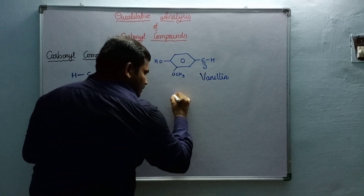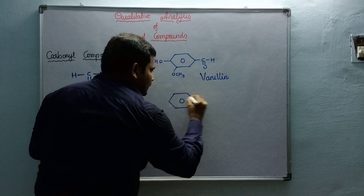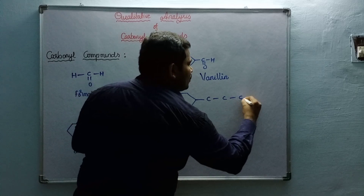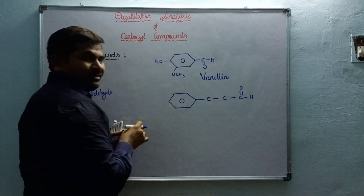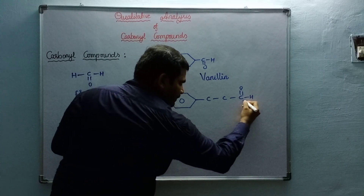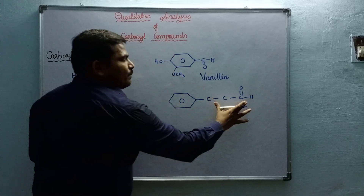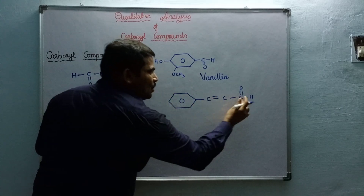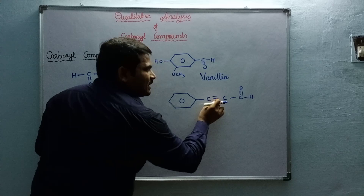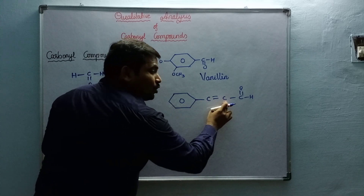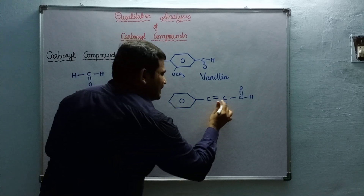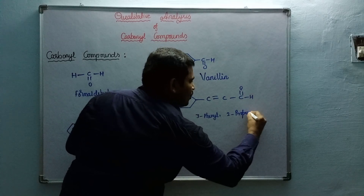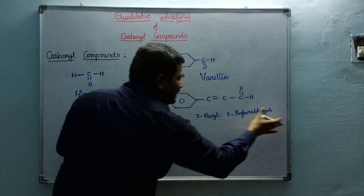The next compound has a phenyl group substituted to propanaldehyde. Numbering from the functional group carbon — one, two, three — the phenyl is at position three, making it 3-phenylpropanaldehyde. However, it is an unsaturated aldehyde with a double bond at position two, so it is correctly named 3-phenyl-2-propenal, also known as cinnamaldehyde.